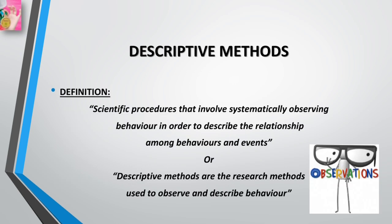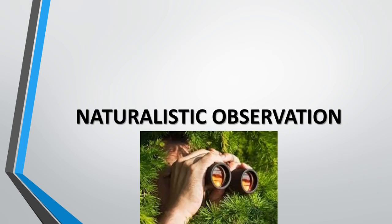The descriptive method involves scientific procedures that systematically observe behavior in order to describe relationships among behaviors. Descriptive methods are research strategies for observing and describing behavior. Using them, researchers can answer important questions such as when certain behaviors take place, how often they occur, and whether they are related to factors such as age, ethnic group, or educational level.